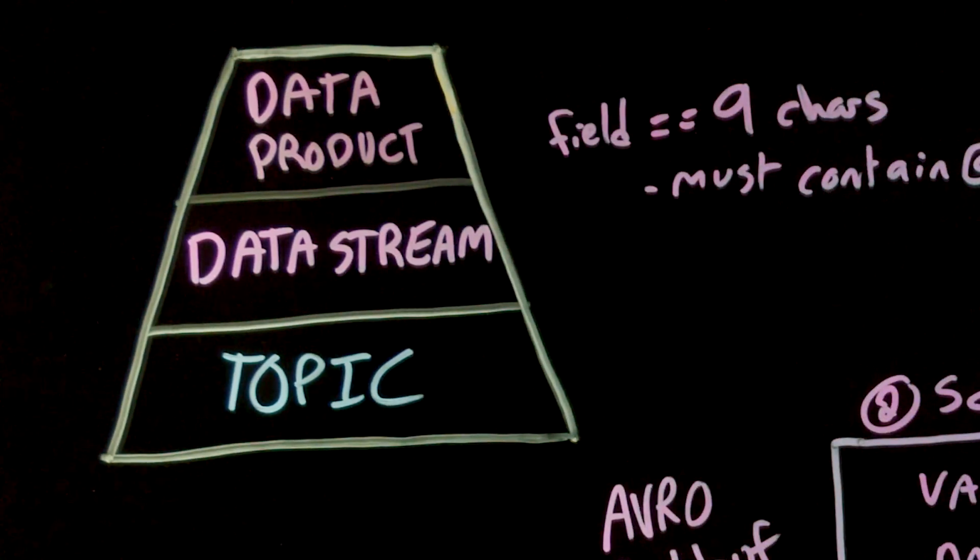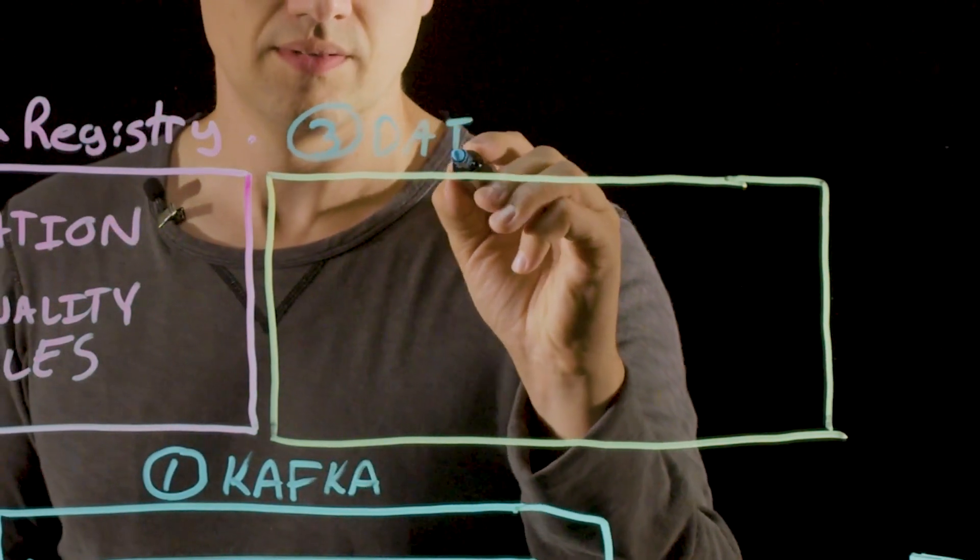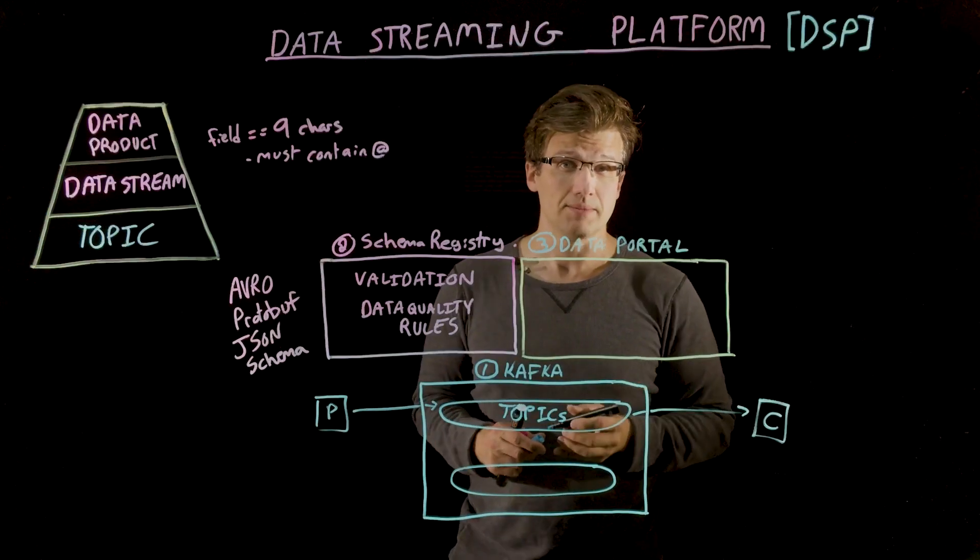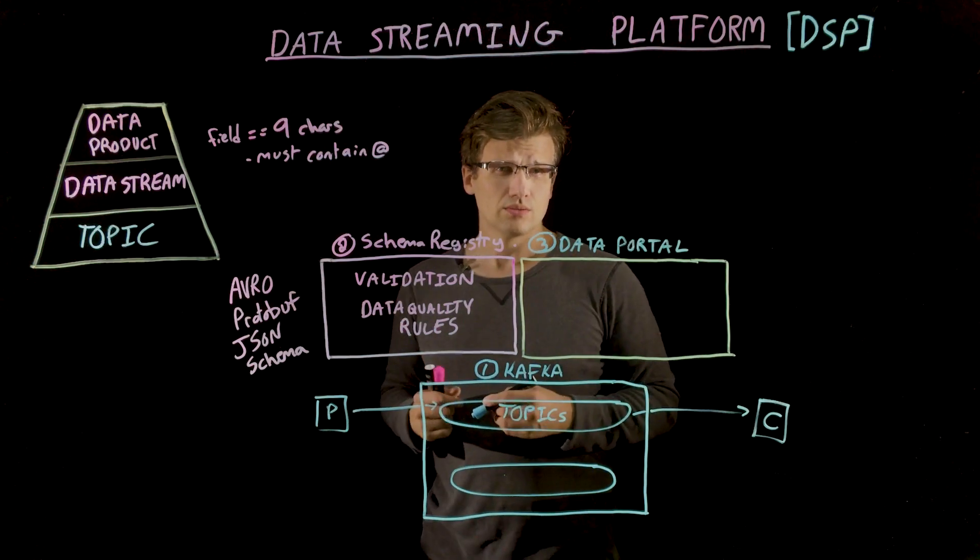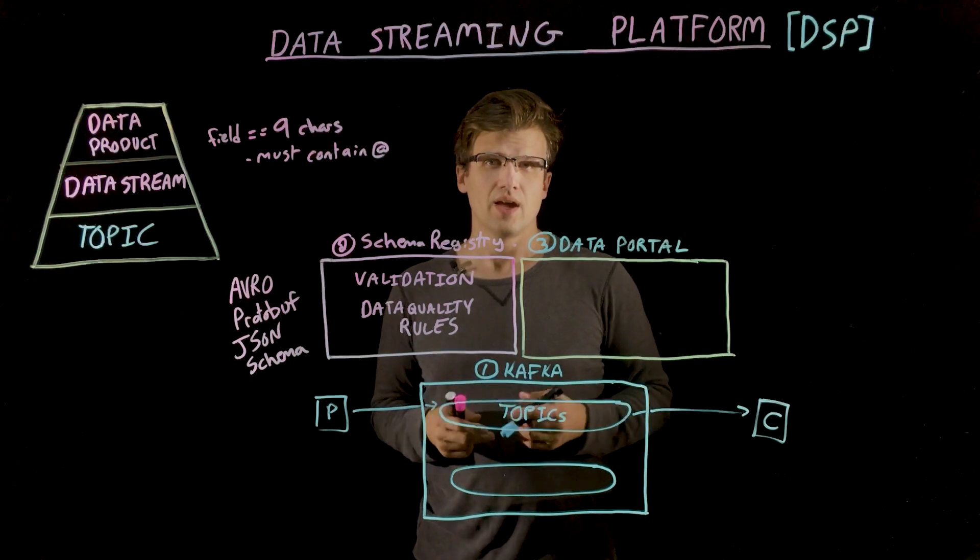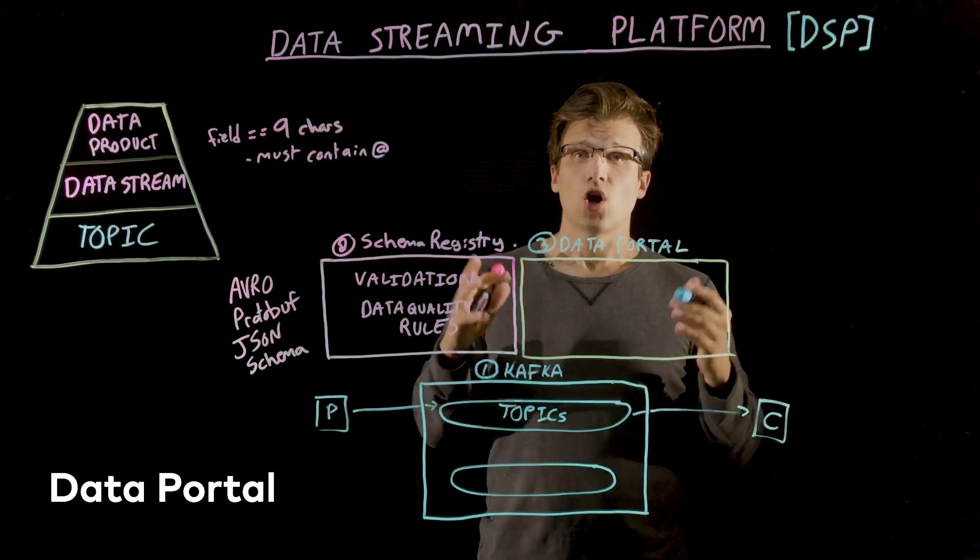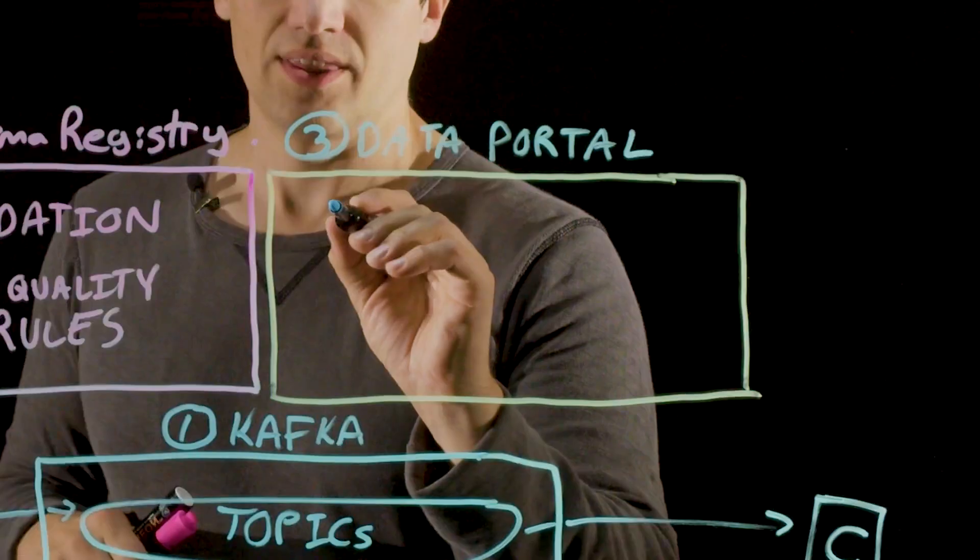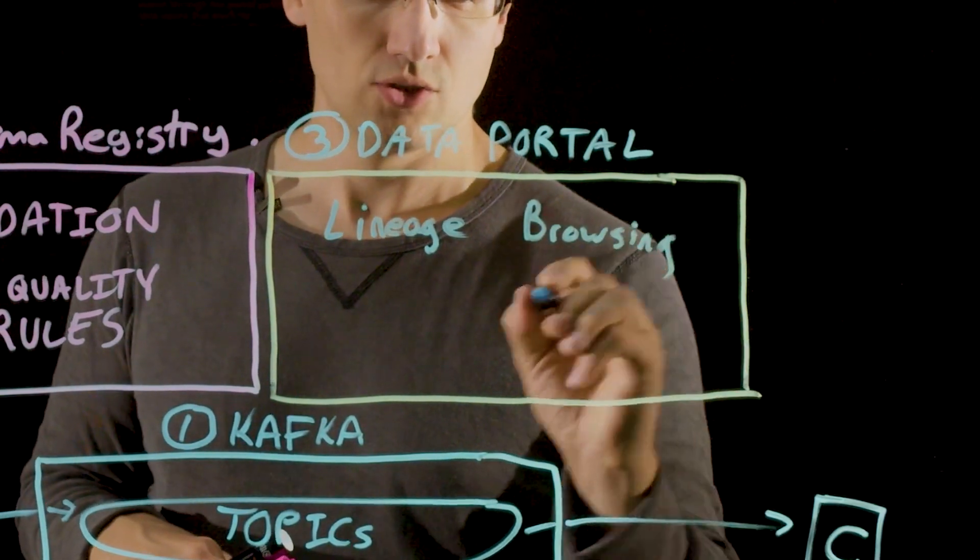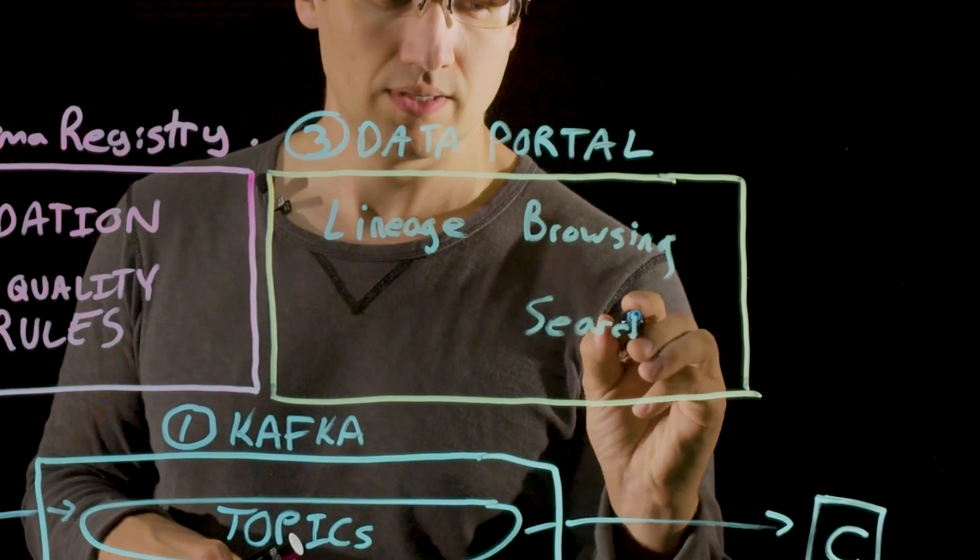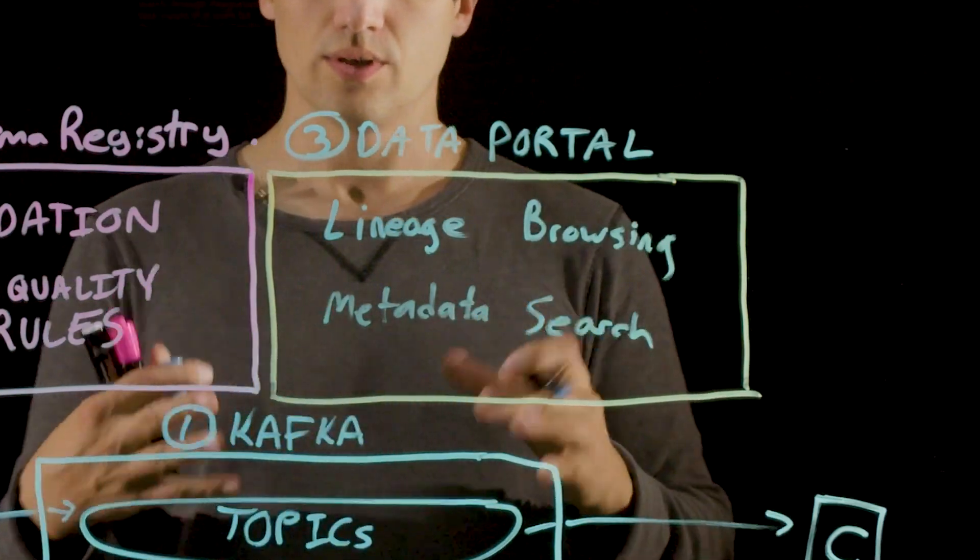For that we're going to need a data portal. The data portal forms the third component of our DSP. So let's say you have all sorts of well formulated data streams. Which ones can you use? Who owns them? And where are they? A data portal, also part of the governance package with schema registry, is a combination of data catalog with lineage, browsing, search, and metadata about the data in your DSP.